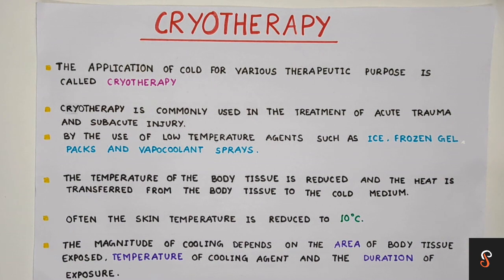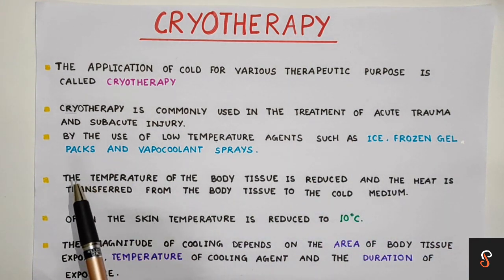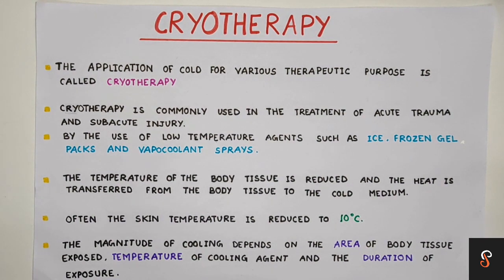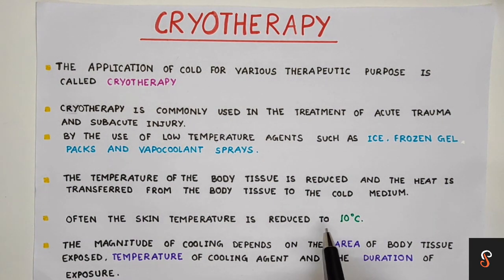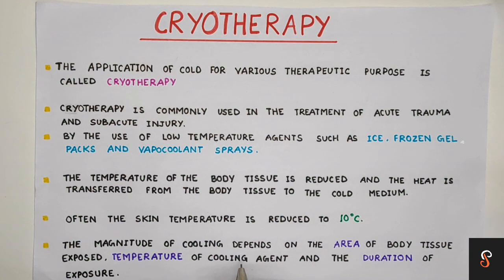We use the treatment of cold for recent trauma. Cold therapy is commonly used in the treatment of acute trauma and sub-acute injury by the use of low-temperature agents like ice, frozen gel pads, and vapor-coated sprays. When cold modalities are used, the skin temperature is often reduced to about 10 degrees Celsius. The magnitude of cooling depends upon three things: first, the area of body tissue uncovered; second, the temperature of the cooling agent; and third, the duration of exposure.